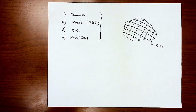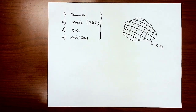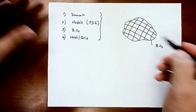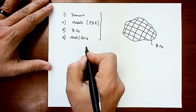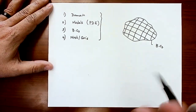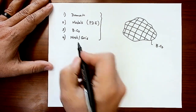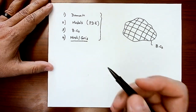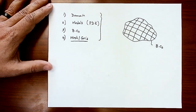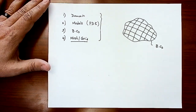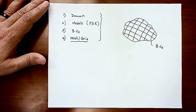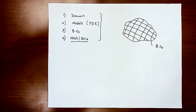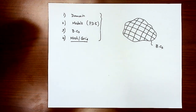Now we need to start getting into solving the problem. Let's assume you are setting different temperatures at the boundary and you want to get the temperature inside that domain. The next step is what people call discretization — though I still consider meshing and gridding as part of that discretization. Some books treat it that way; others say discretization is a standalone process that follows the mesh or gridding.